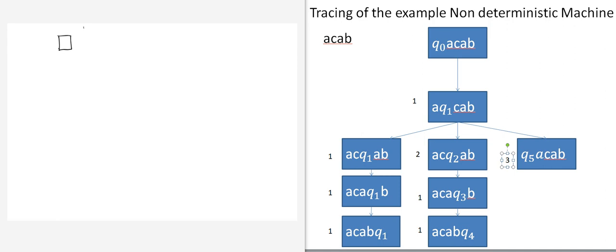On the first tape you would have the input — so it would be A, C, A, B — that would be your representation. Then you would start doing the tracing, and at the beginning you would need to start with the addressing so that you can go through each one of the branches.